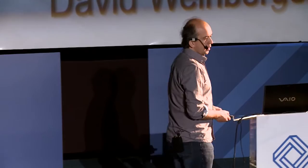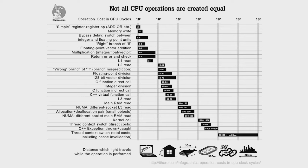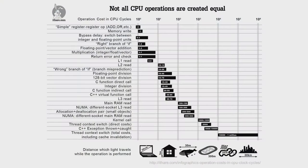A recent blog posting showed that not all CPU operations are created equal — on a logarithmic scale showing the relative costs of operations and the distance light travels while the operation is performed. One light nanosecond is here to here — that gives you a cycle time of one gigahertz, which doesn't sound particularly fast when you put it like that. The ones I want to draw your attention to are thread context switch direct costs and thread context switch indirect costs. It is not cheap — so you better be getting a really good deal.